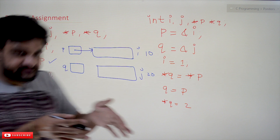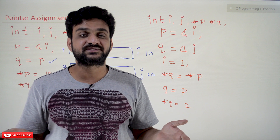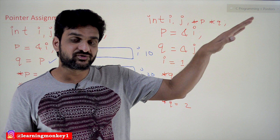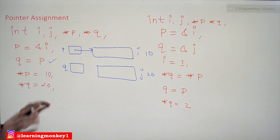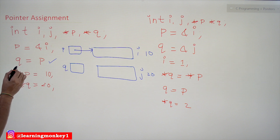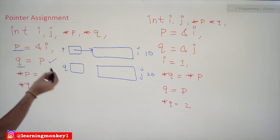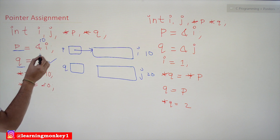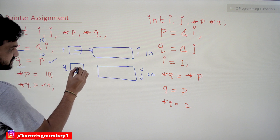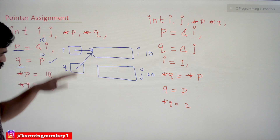The next line is q = p. A pointer of the same type can be assigned to another pointer of the same type. Both int* p and int* q point to integer memory locations, so if both are of the same type we can assign them this way. What happens is q points to the same memory location that p points to. P is pointing to 10, so 10 is assigned to q — q is also pointing to 10. In this way, many pointers can point to the same memory location.